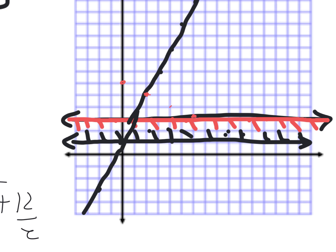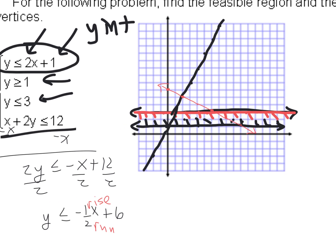Rise negative 1, run 2 — I hit it right there. These spots where you get perfect whole numbers are called lattice points. Rise negative 1, run 2 again — I hit another lattice point. A lot of times your points end up at lattice points and you can just read the graph to see where the lines intersect.